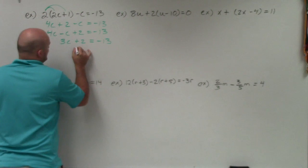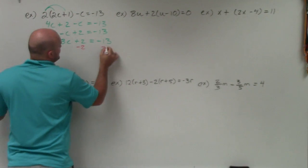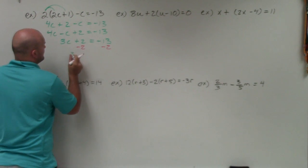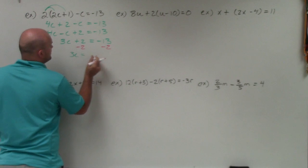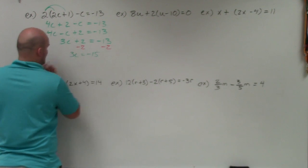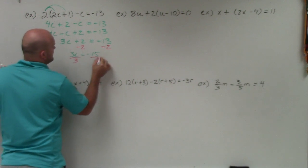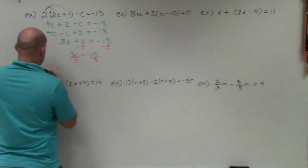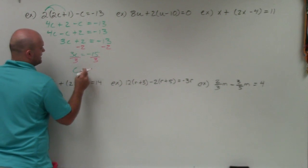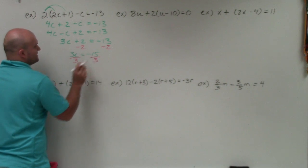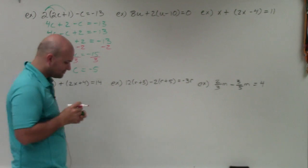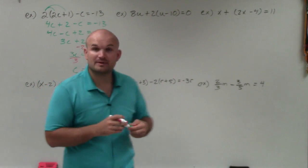I've simplified my equation down to a two-step equation. That's the most important thing with multi-step equations — simplify it down to a two-step problem. Once it's two-step, I'll use my subtraction property of equality: 3c equals negative 13 minus 2, which is negative 15. Then divide by 3 on both sides, and c equals negative 5.